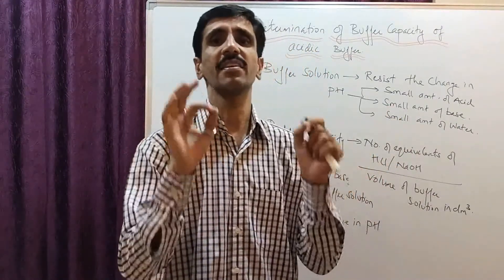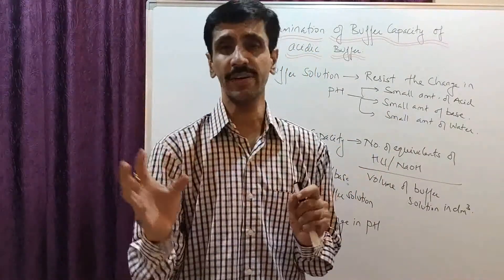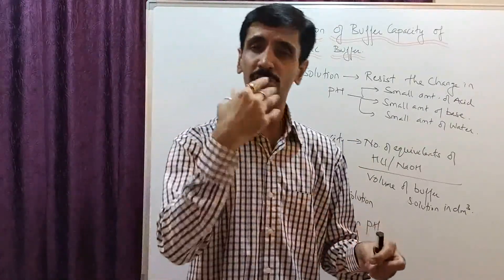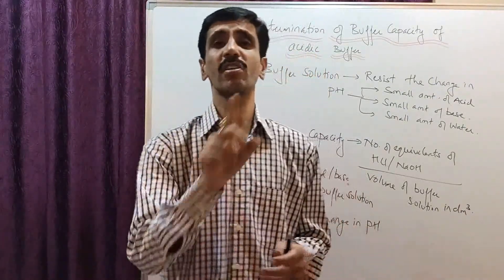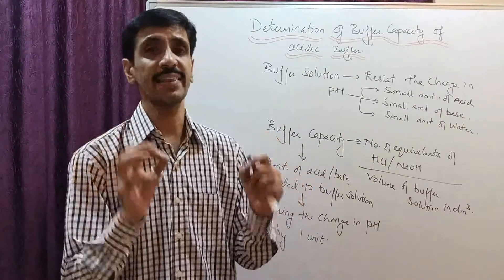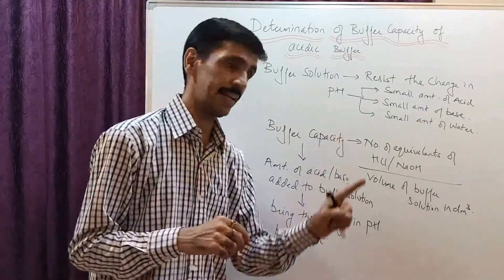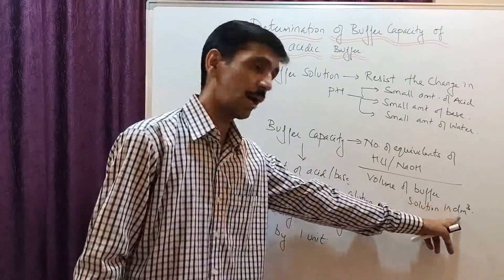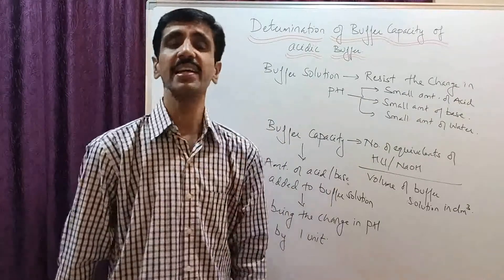The mathematical expression for buffer capacity is the number of equivalents of HCl or NaOH divided by the volume of the buffer solution, and the unit is dmq (dm⁻³). Yes, it is in dmq.